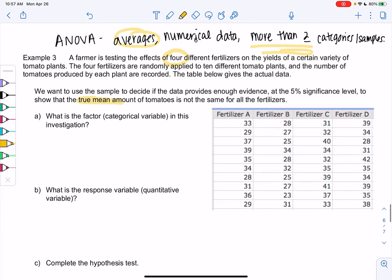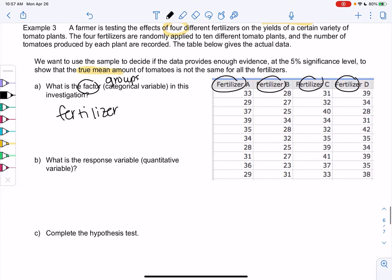So what is the factor? So factor just means groups. So my groups are the fertilizers. So type of fertilizer or just fertilizer. The fertilizer are the groups. What's the response variable? So what is the actual variable that we're measuring? That would be the number of tomatoes. That's my data. So that's what we're calculating average of.